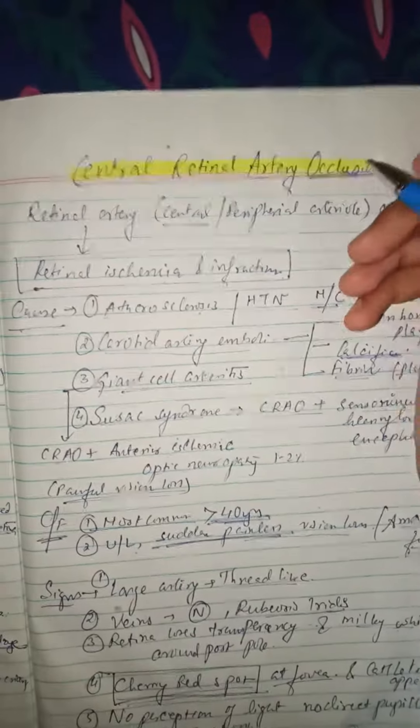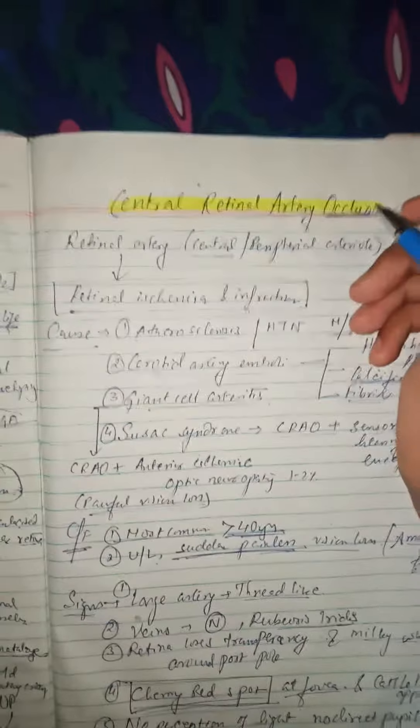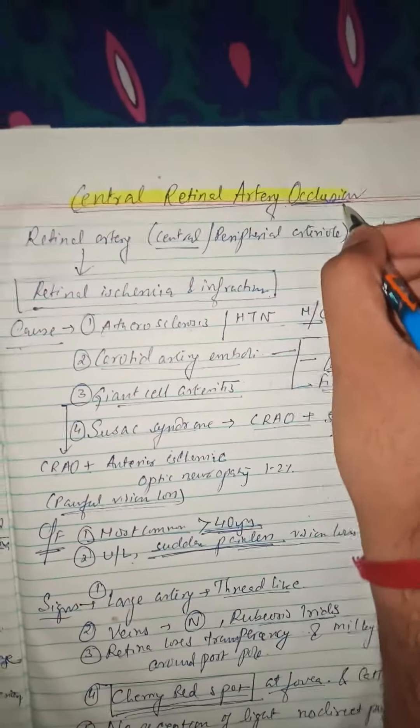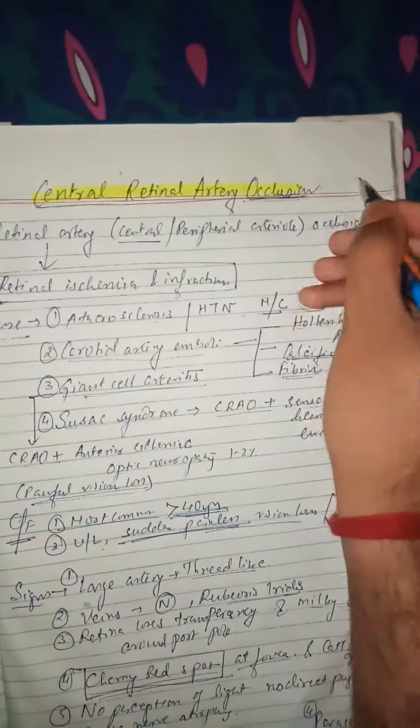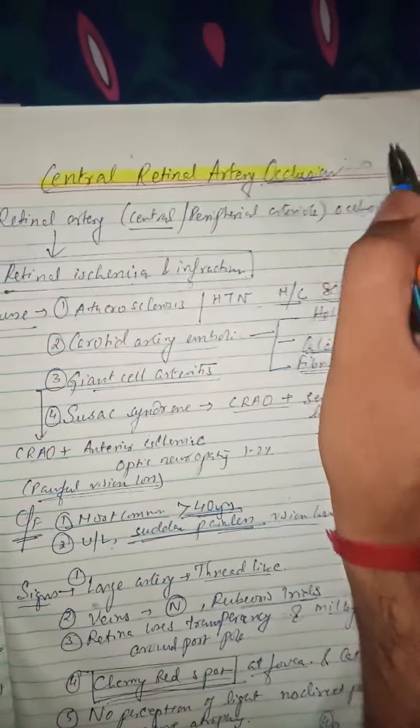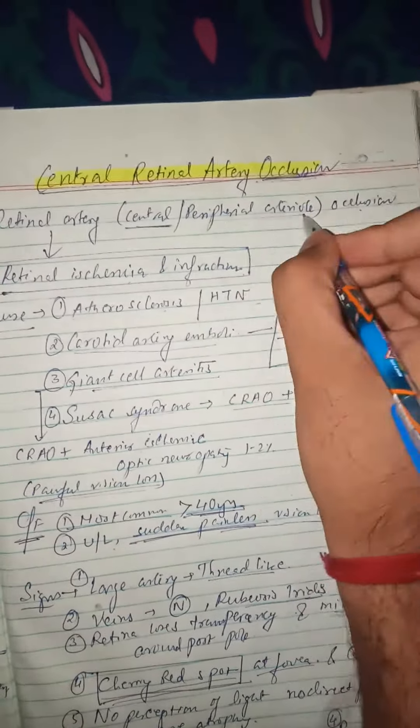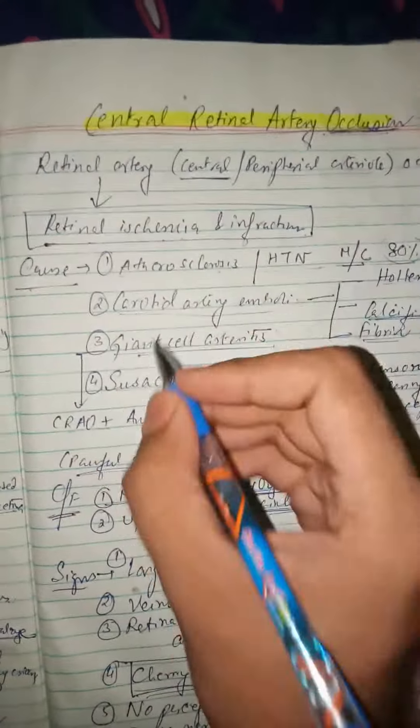Good morning everybody. Today we are going to talk about retinal disease: Central Retinal Artery Occlusion. Central retinal artery occlusion means blockage of the artery. It can be the central artery, a branch of the central artery, or a peripheral artery, leading to retinal ischemia or infarction.